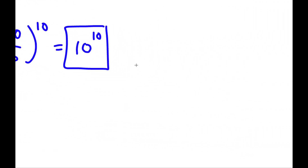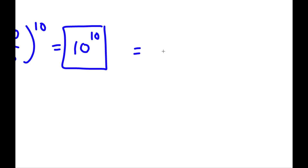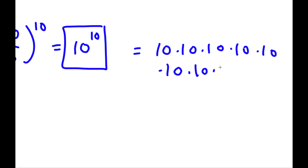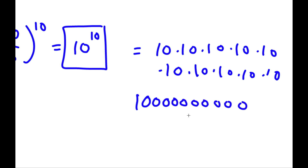And 10 to the power of 10 can also be simplified. 10 to the power of 10 is 10 multiplied by itself 10 times, which is the same thing as a 1 with 10 zeros. So our answer here is 10 billion.